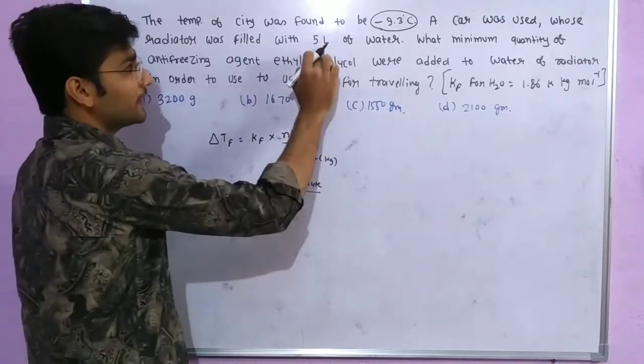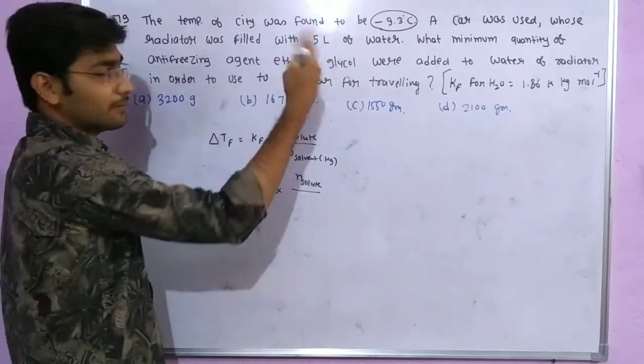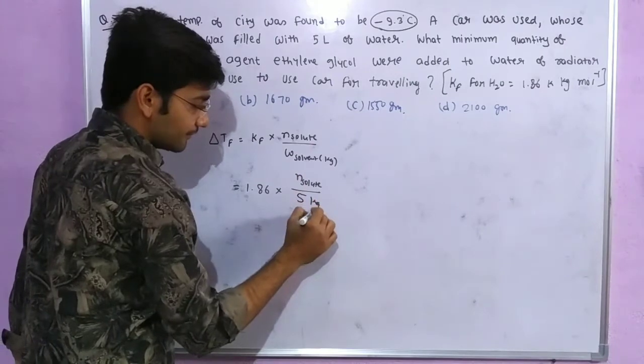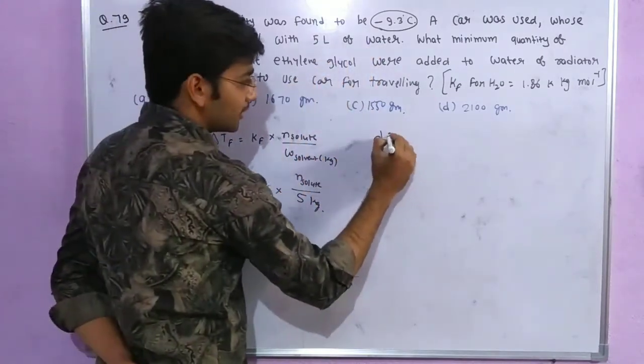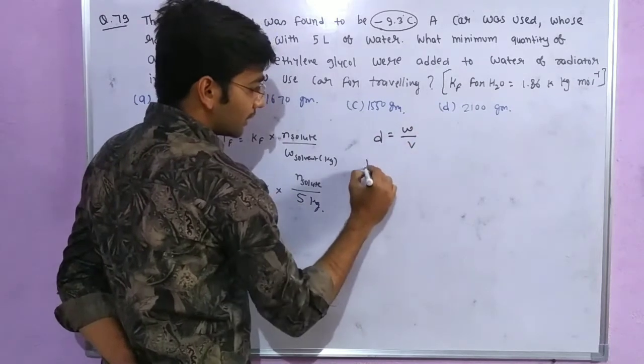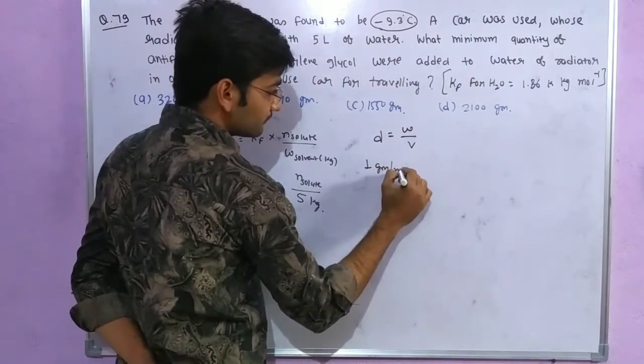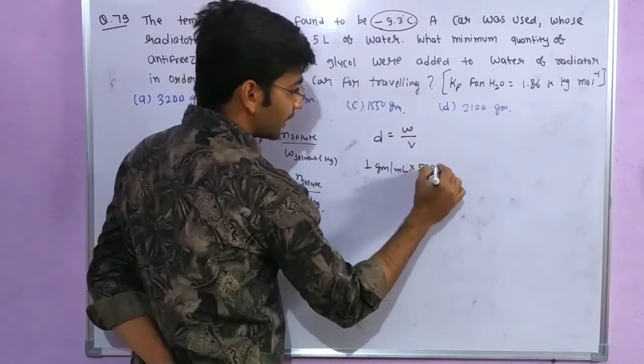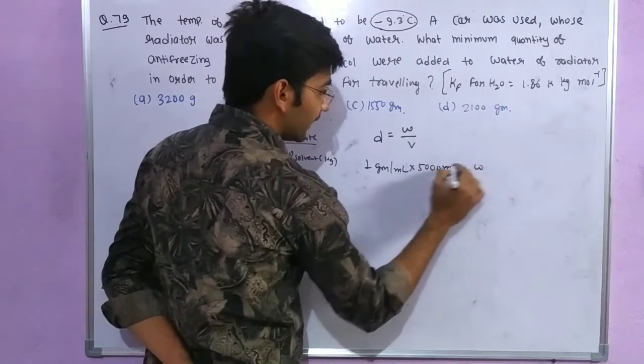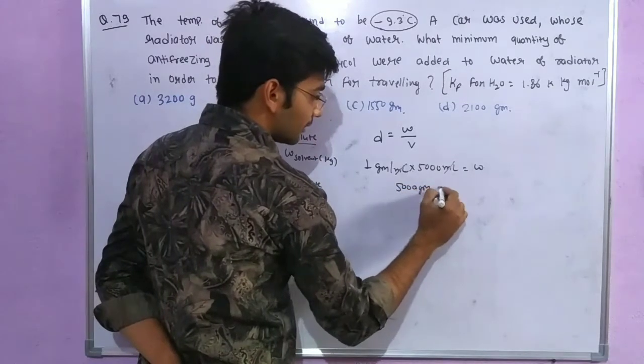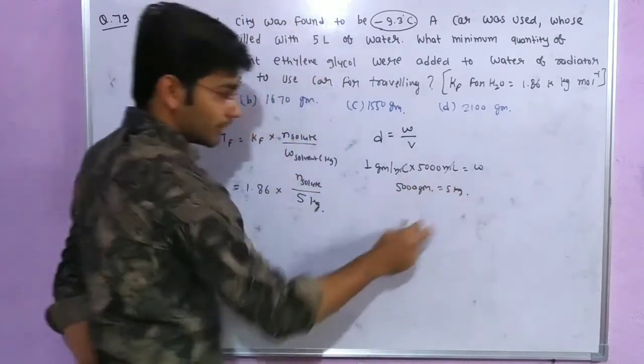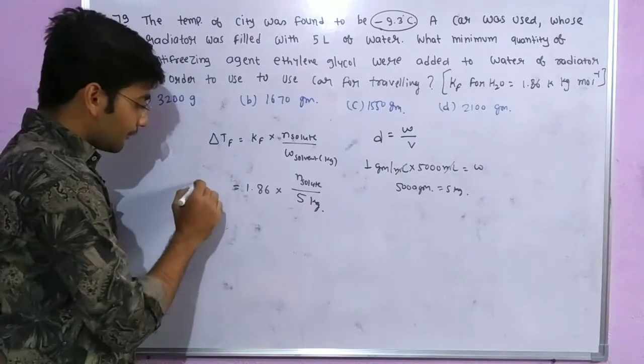The solvent volume needs to be converted to weight. We have five liters. Water density is mass upon volume, which is one gram per milliliter. Volume is 5,000 milliliter, so weight is 5,000 gram. This is five kilogram of water.